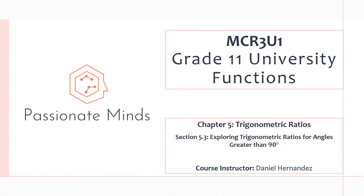Hello everyone, welcome back to the next lesson of chapter 5. Today we will be covering section 5.3, where we will be exploring trigonometric ratios for angles greater than 90 degrees. Last lesson we looked at primary and reciprocal ratios within a right angle triangle and worked with angles less than 90 degrees, but today we will expand our understanding and go greater than 90 degrees.